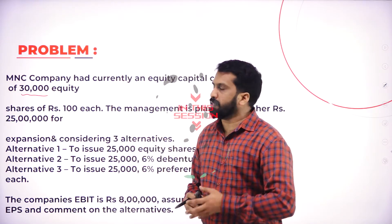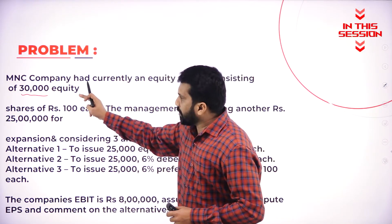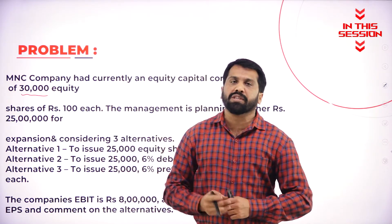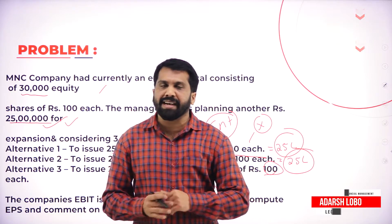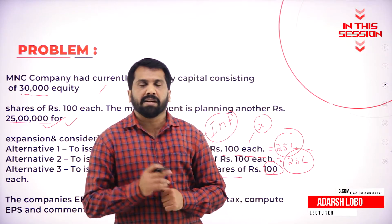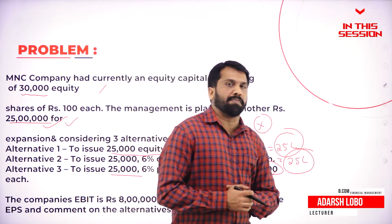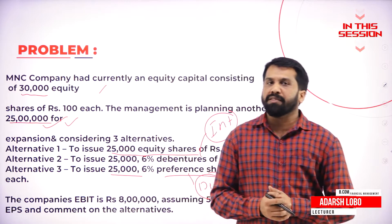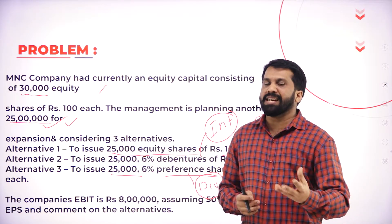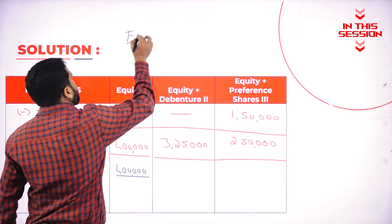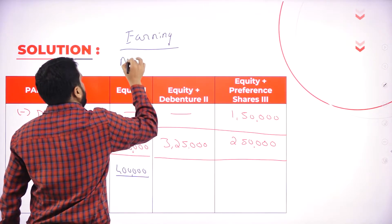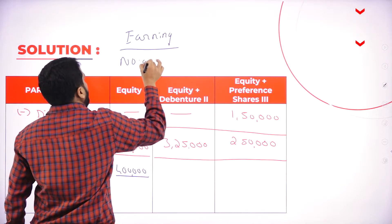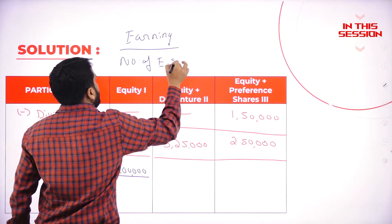When rupees are not mentioned, we call it the number of shares. For preference shares, we don't calculate interest. For equity shares, you are not paying anything. For debentures, you are supposed to pay interest. For preference shares, you have to pay dividend. The formula is: Earning divided by number of equity shares.